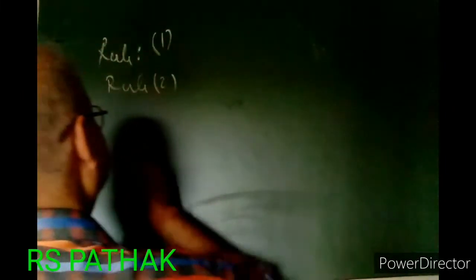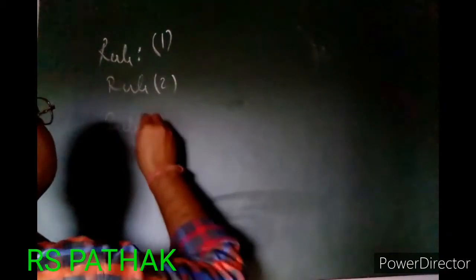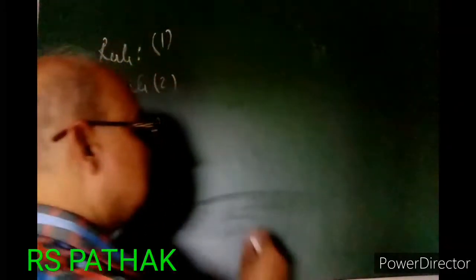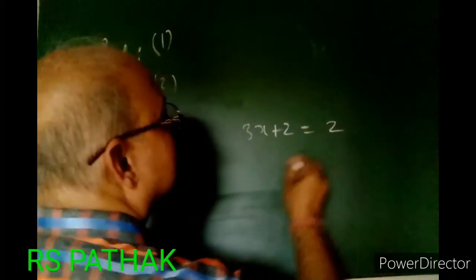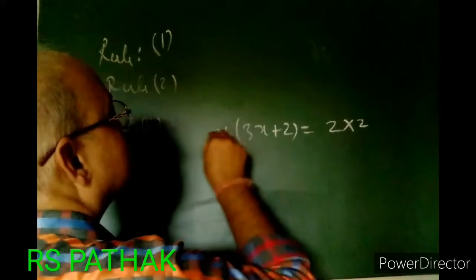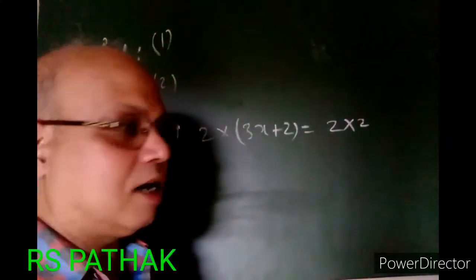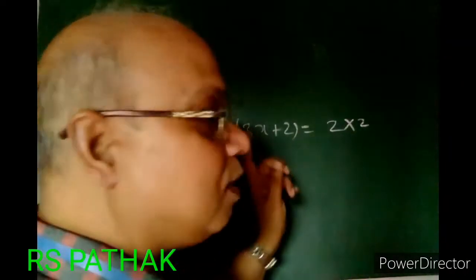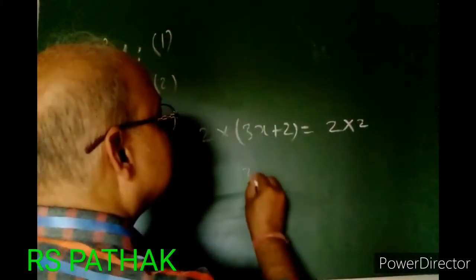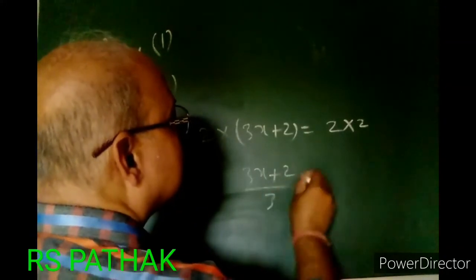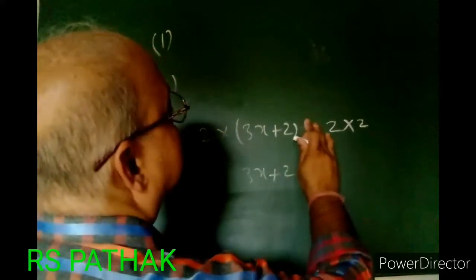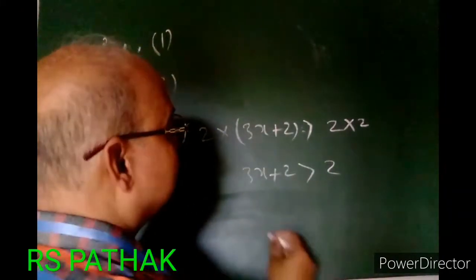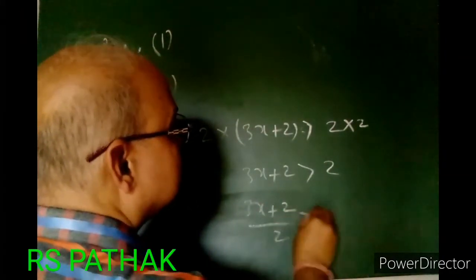Rule number 3: both sides will be multiplied by the same number. For example, if 3x + 2 = 2, we multiply both sides by 2. Both sides can also be divided by the same number — for example, 3x + 2 divided by 2 on both sides.